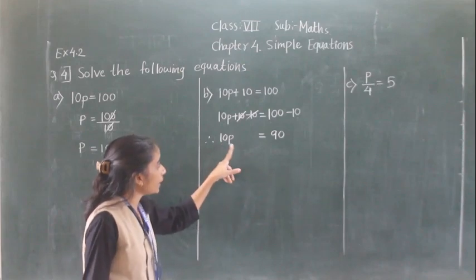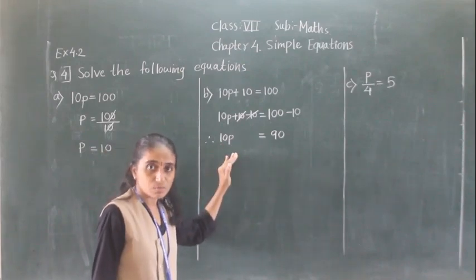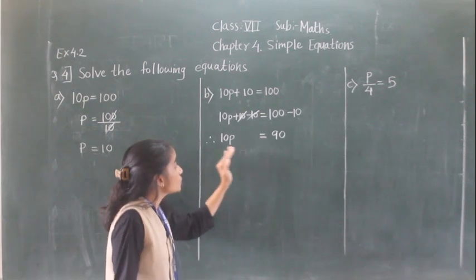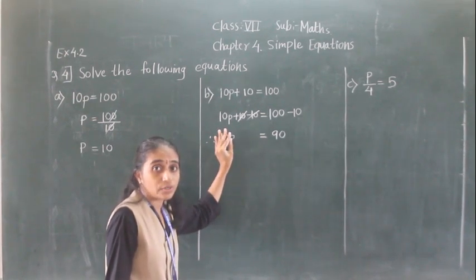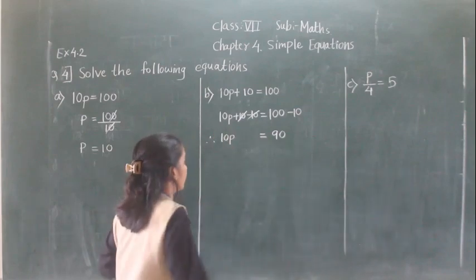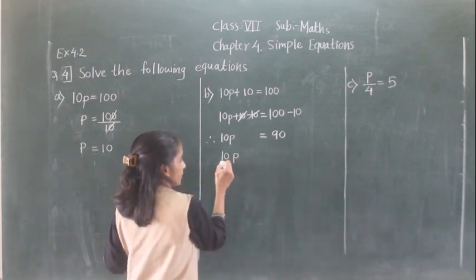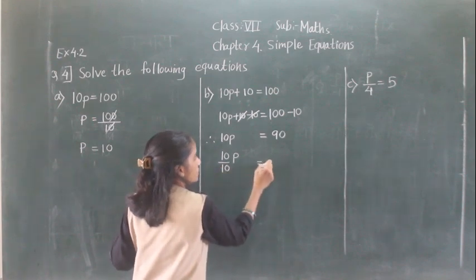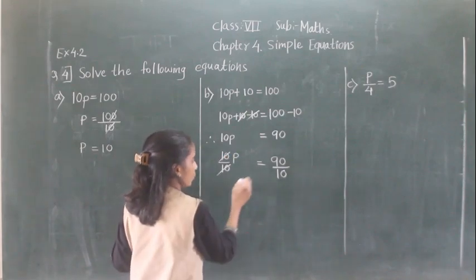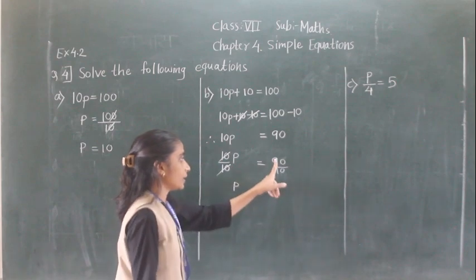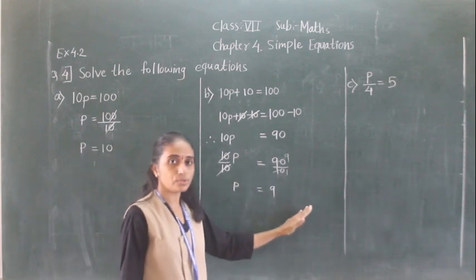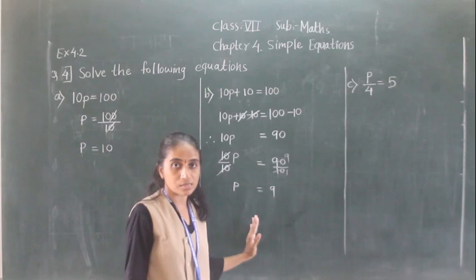Now 10p means 10 times p, so multiplication is there. We divide both sides by 10. This 10 and the other 10 get cancelled, giving p = 90 divided by 10. So p is equal to 9. This answer is obtained using the balancing method.